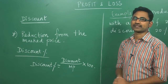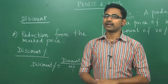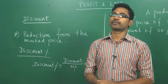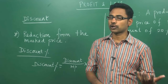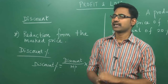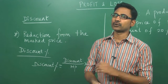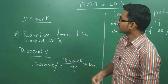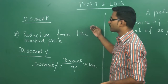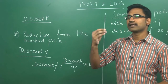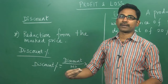The next topic is about discount, which is a term you normally come across in daily life. When you go to a shop, you ask for some discount; when you go to a cloth shop, they give you some discount. Discount is a reduction from the market price — the value deducted from the market price.